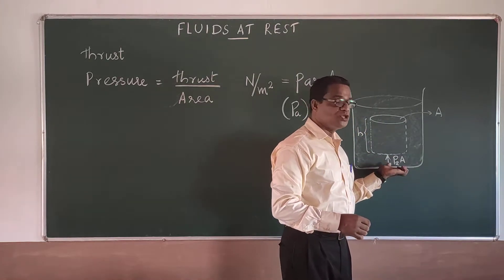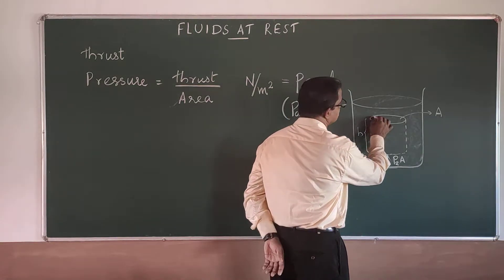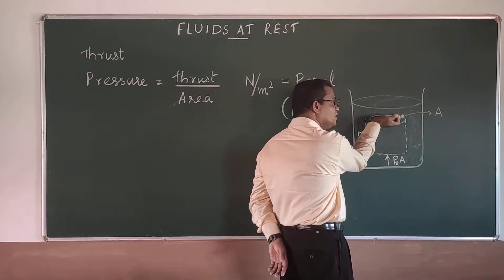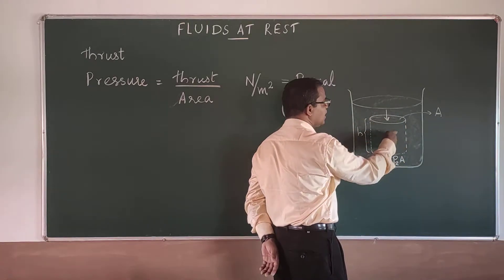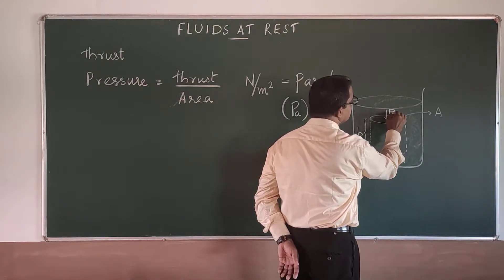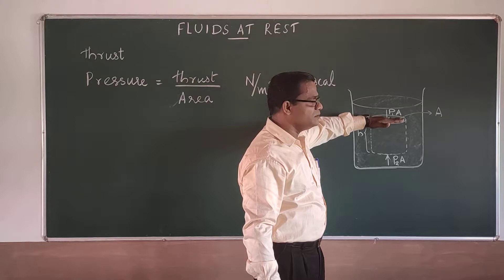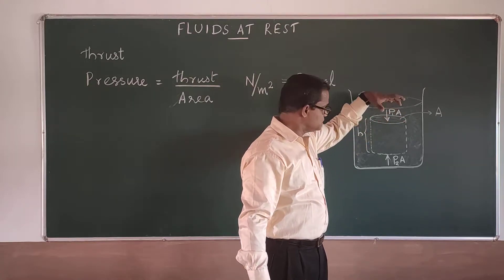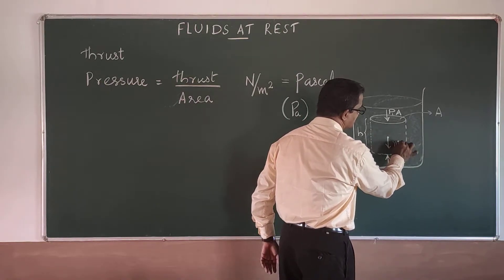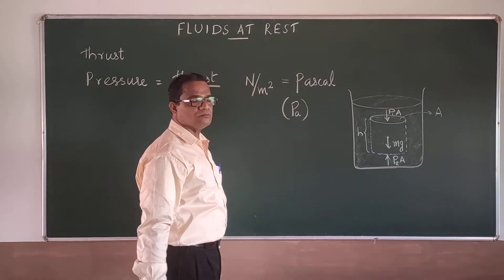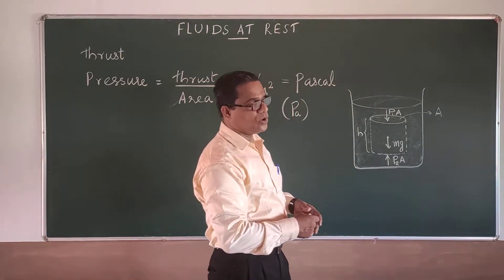There is a force P2 into A acting upward. Due to the column of liquid above, there will be a force P1 into A acting downward, where P1 is the pressure at the top point. And effectively, the weight of this column acting downward is mg. So these are the forces acting on that column.